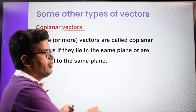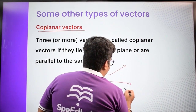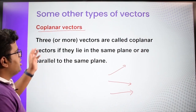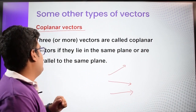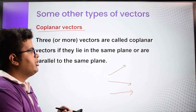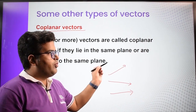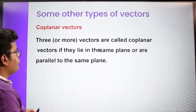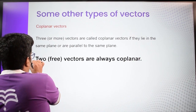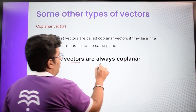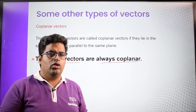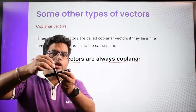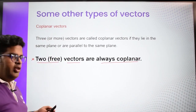Co-planar vectors: if this board is a plane and we draw three vectors all lying in the same plane, they are co-planar. The definition is: three or more vectors are called co-planar if they all lie in the same plane or are parallel to the same plane. An important point to note is that two free vectors are always co-planar.